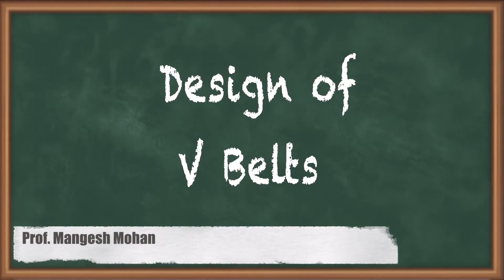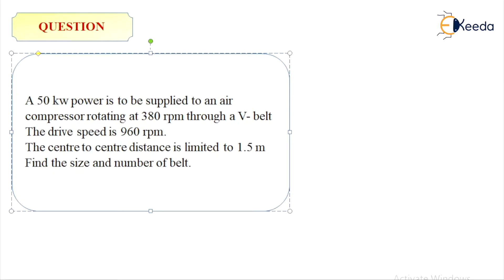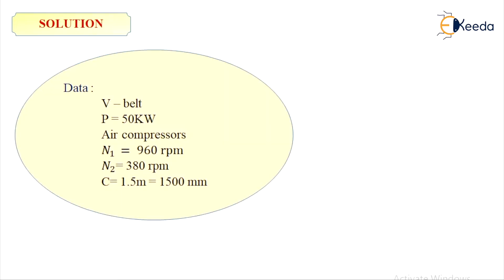Hello students, let's see another numerical from the design of V-Belt. A 50 kilowatt power is to be supplied to an air compressor rotating at 380 RPM through a V-Belt. The drive speed is 960 RPM. The center to center distance is limited to 1.5 meter. Find the size and number of belts. The given data: belt type is V-Belt, power P = 50 kW, machine is air compressor, N1 = 960 RPM, N2 = 380 RPM, center to center distance C = 1.5 meter = 1500 mm.